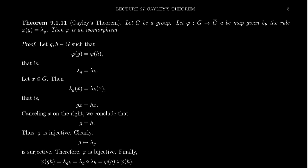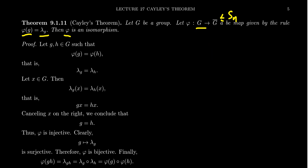We've now reached Cayley's theorem. We started with a group G and produced G-bar, a subgroup of the symmetric group. Cayley's theorem argues that G and G-bar are isomorphic — and since G-bar is a subgroup of S_n, every group up to isomorphism is a subgroup of S_n. We prove this via the map φ: G → G-bar defined by φ(g) = λ_g.